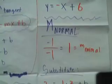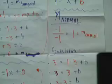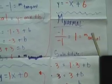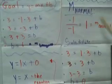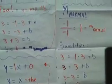And now, our normal line. Remember, don't forget to put the negative 1 over your m tangent. In this case, negative 1 over negative 1 is just 1. Then you have your slope and your point. You plug it in, and you get y equals x. That's the equation of the normal line.